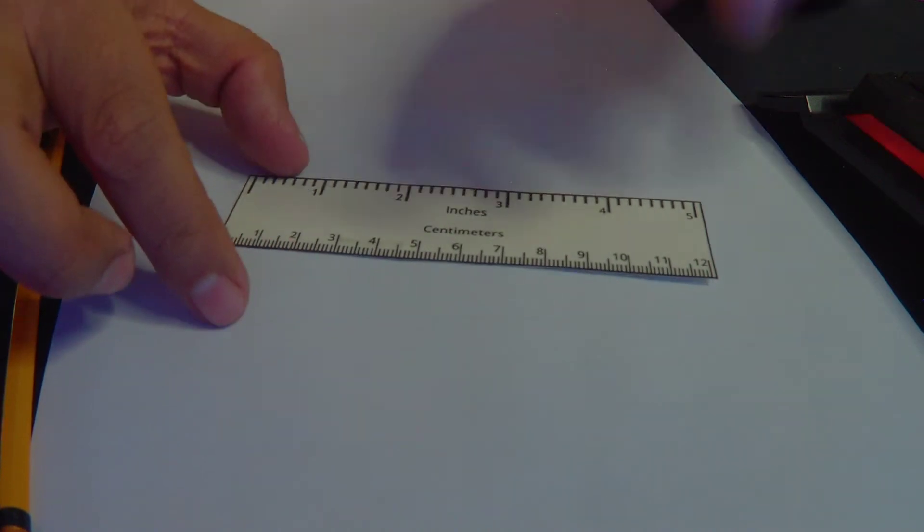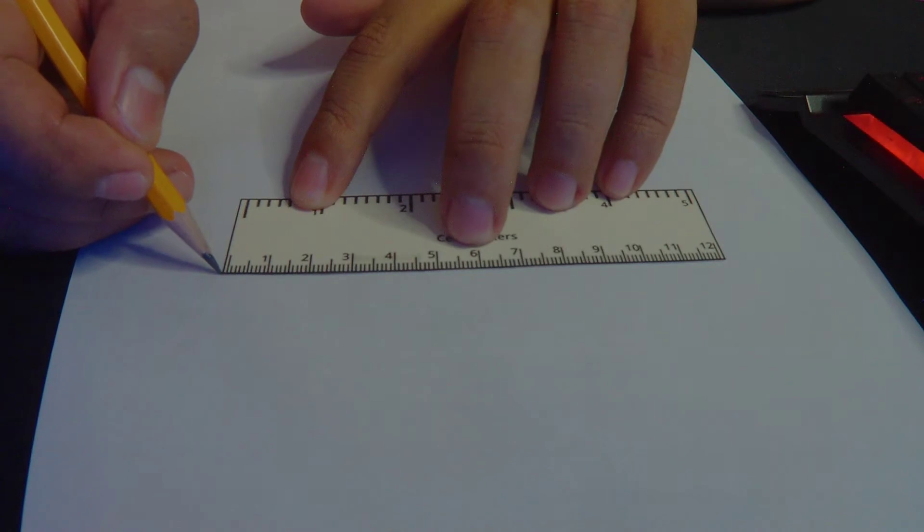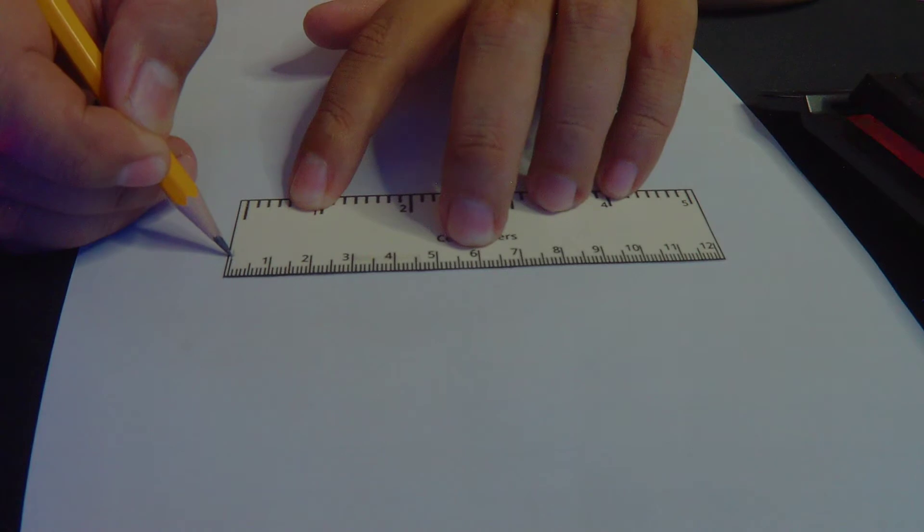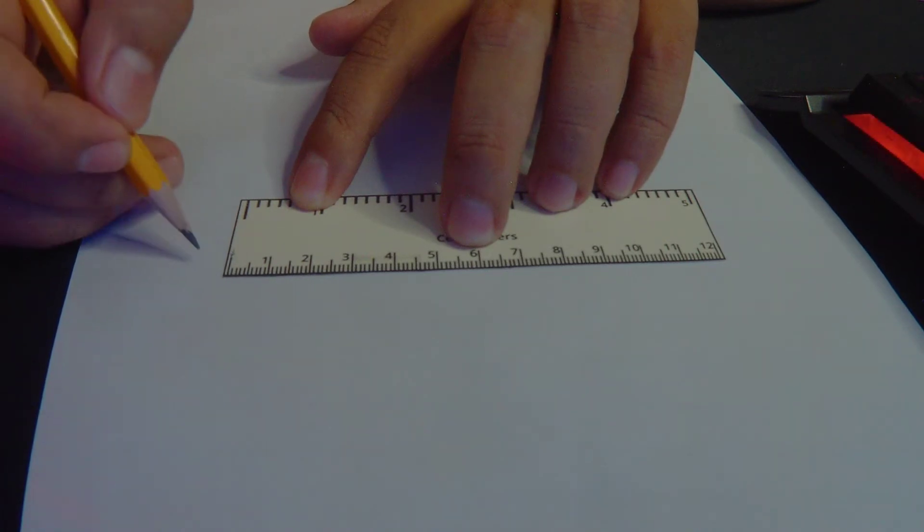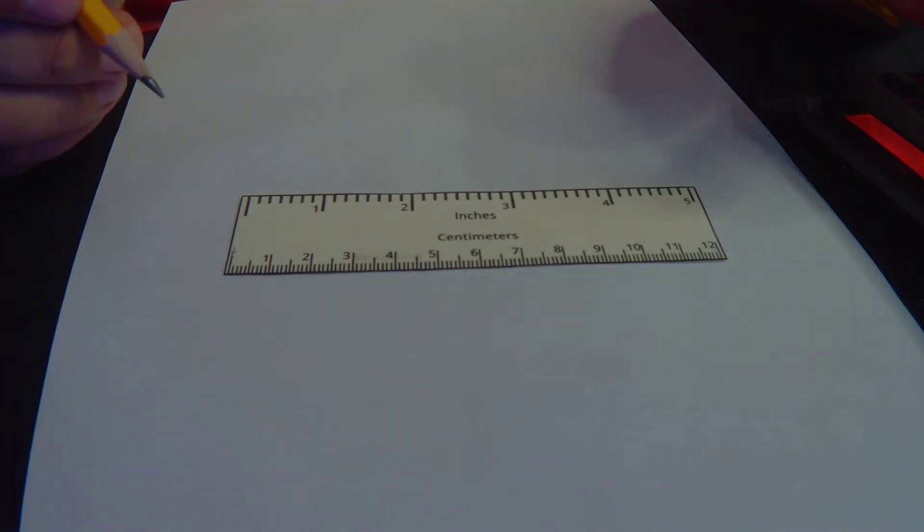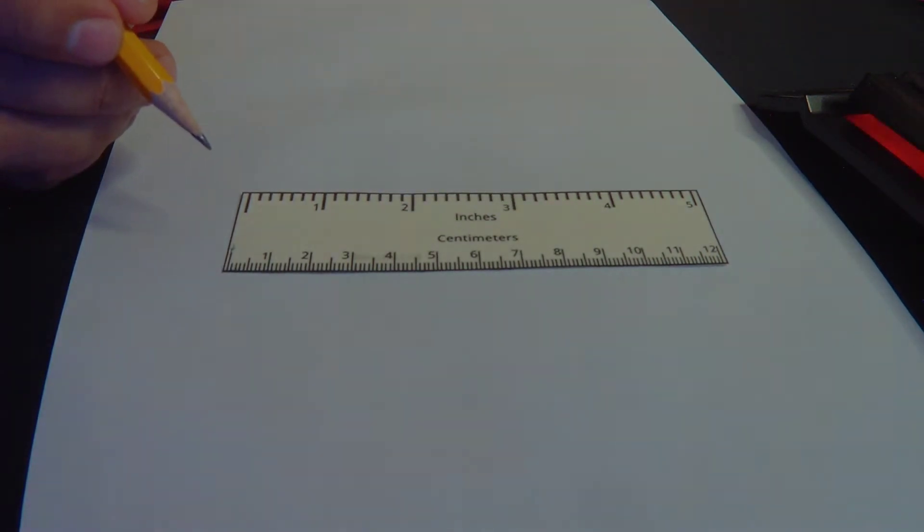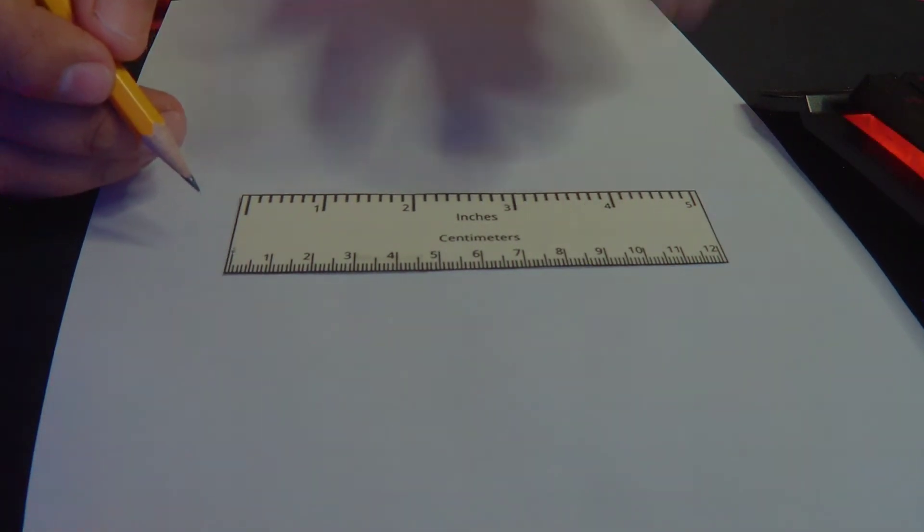When we measure, we always start at zero, the first mark. Not here. Not here, but at this point. Because if you're going to start at the edge of the ruler, that will give you a slight difference in terms of measurement. So when we measure, we always start at this point, the first mark, rather than the edge of the ruler, unless your ruler starts at zero centimeters.